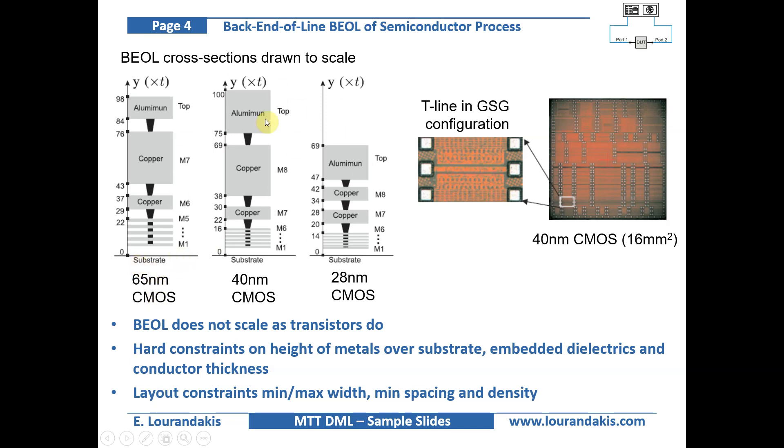Here on the left we see some scaled back end of line cross sections of various CMOS technologies starting from 65 nanometer CMOS down to 28 nanometer CMOS. We can easily identify that the number of metal layers, the conductor thickness and their height from the substrate can vary largely between processes. It is therefore critical to understand the back end of line and the electrical limits imposed on the passive devices.